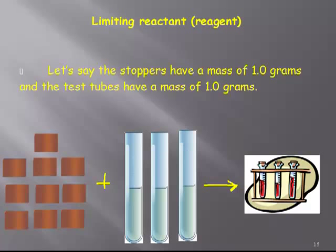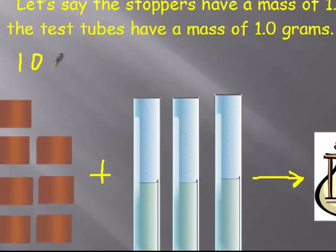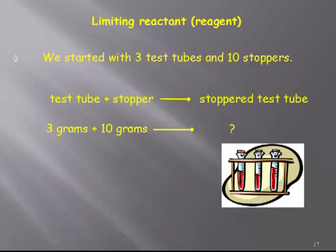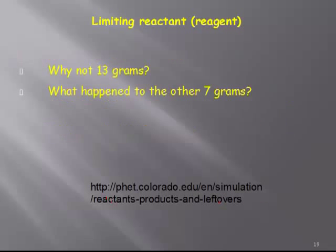Let me go a step further. Let's say the stoppers have a mass of one gram, so I have 10 grams. Test tube is also a gram, so I have three grams. Now we know about the law of conservation of mass. The law of conservation of mass says matter cannot be created nor destroyed. So if I start with 13 grams, I have to end up with 13 grams. But we just said we can only make three stoppered test tubes. So on the other side, I can only make three, so I'm going to have a total of six grams. So the question is where is the other seven grams? What happened to the other seven grams? Well, the answer to that is it's the leftover stoppers.